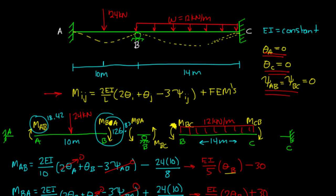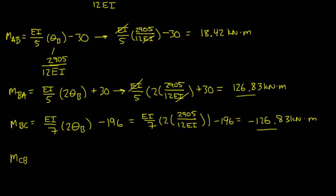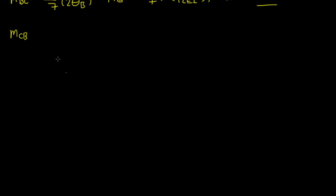Where is, you can scroll back down. M_CB, that's equal to EI over 7, 2905 over 12EI, right? That's EI over 7 theta b, that was our equation, plus the 196, and if you solve that out.